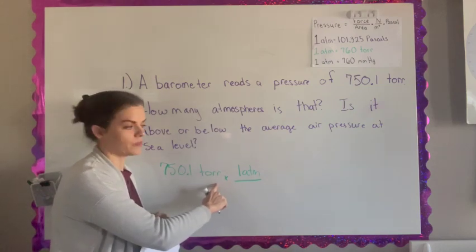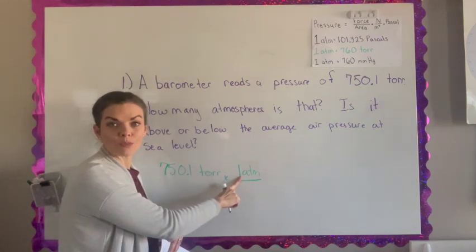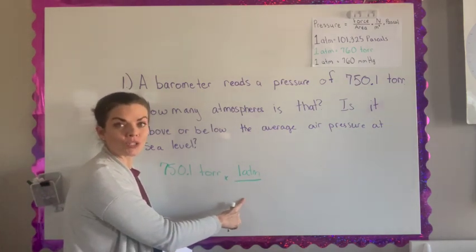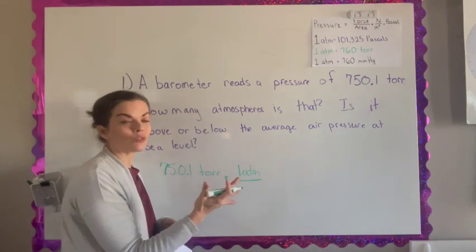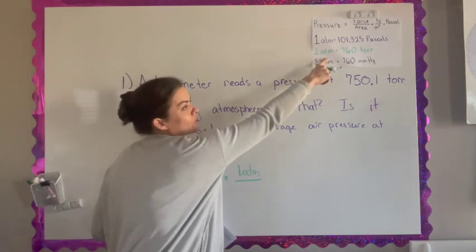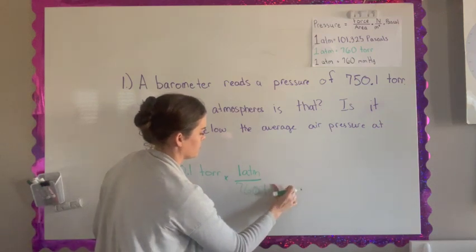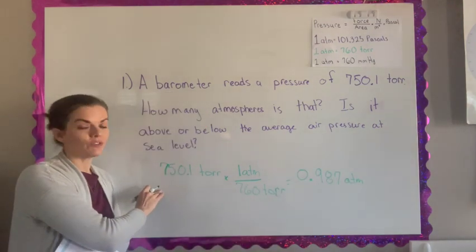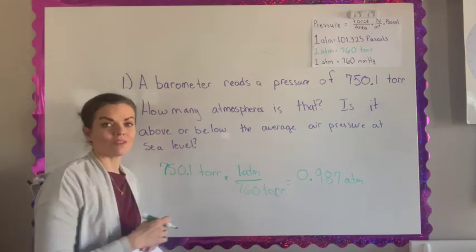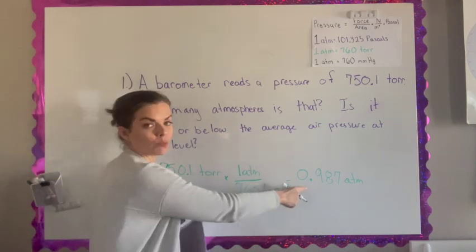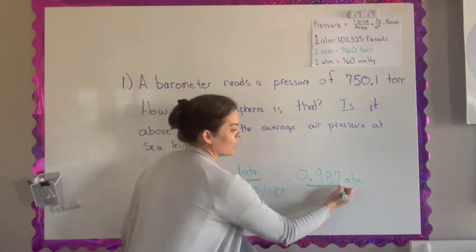I'm starting with what I know. I'm going to atmosphere so I'm going to put it on the top and I'm going to put torr on the bottom so it cancels out. The ratio for torr to atmosphere is 760 torr is one atmosphere. When I take 750.1 and I divide it by 760 torr I'm left with 0.987 atmospheres.